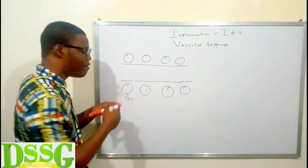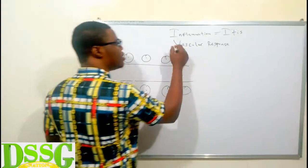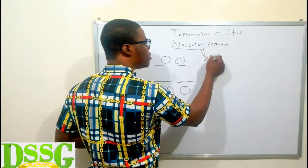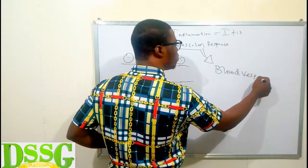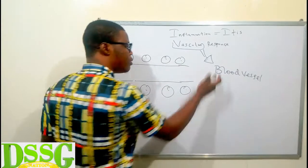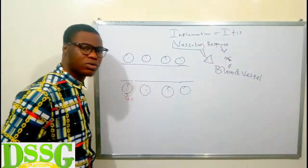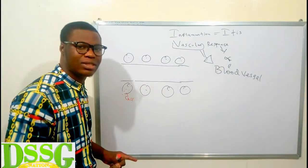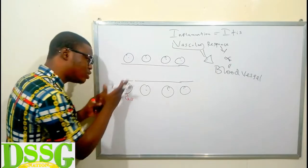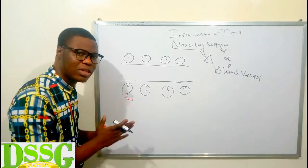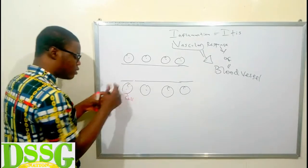The word 'vascular' denotes blood vessel, so the vascular response is the response of the blood vessel to tissue damage. When there is an injury to a particular body part, the capillary bed of that site is going to be affected. Since blood is running through it, blood will start escaping from the capillary bed.